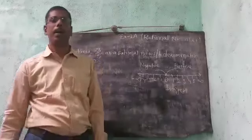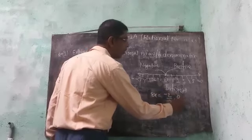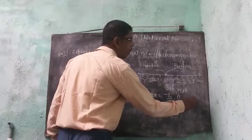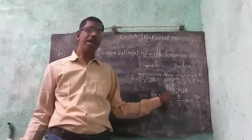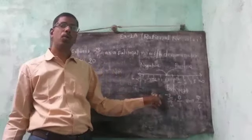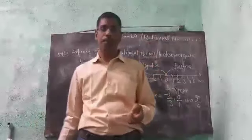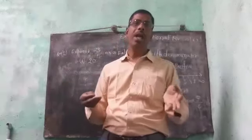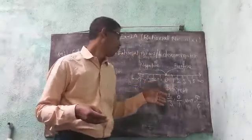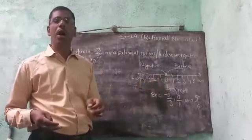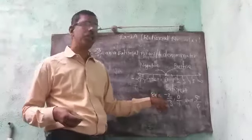Integers. Examples: minus 2 by 3, 0 by 1, and 5 by 6 — these are in the form of P by Q. Example of rational number. Definition of rational number: A number that can be expressed in the form of P by Q, where P and Q are integers.